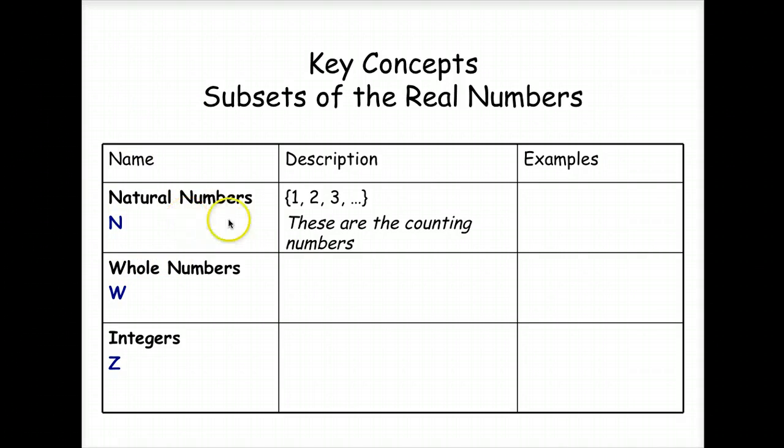The description of a natural number is the set 1, 2, 3 and continues on. These are the numbers that you use to count with. So they're also called the counting numbers. An example of counting or natural numbers are 4, 7, 15.